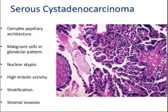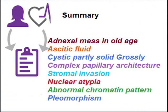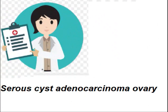To summarize the microscopic features: compact papillary architecture, malignant cells in a glandular pattern, nuclear atypia, high mitotic activity, stratification, and stromal invasion. Summarizing overall: adnexal mass in an older patient, ascitic fluid, cystic and partly solid appearance grossly, complex papillary architecture, stromal invasion, nuclear atypia, abnormal chromatin pattern, and pleomorphism on microscopic examination. We can name this lesion as serous cystic adenocarcinoma of the ovary, because the epithelium is serous, it is cystic, and it is malignant.